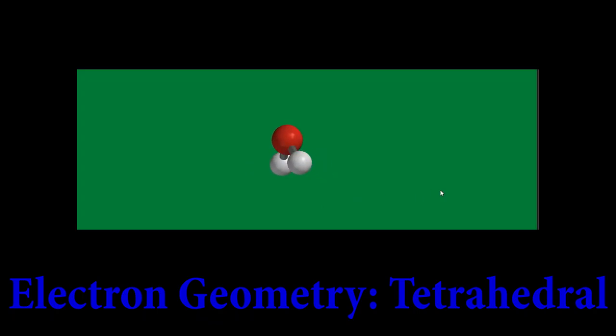A water molecule is a great example to look at. Water has two hydrogens and two lone pairs, so it has four points total in the polyhedron, which makes it a tetrahedron. So the electron geometry is tetrahedral.